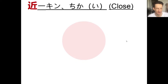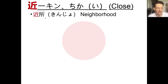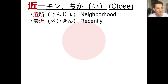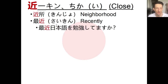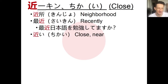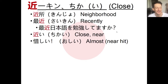Now let's look at the character for close — chikai. We have words like kinjo, which means neighborhood, a close place where you live. Next, saikin, which means recently — definitely a word you'll want to remember since you'll hear and use it a lot. And chikai as an i-adjective by itself is extremely useful: suupaa wa chikai desu — the supermarket is close; eigakan wa chikaku wa nai — the movie theater is not nearby.